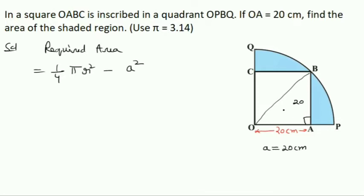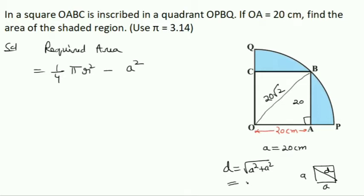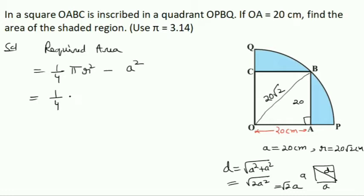Area of the quadrant is (1/4)πR² since it is one fourth of the circle, minus A² for the area of the square. The diagonal of a square is side × √2. By the Pythagorean theorem in triangle OAB: OB² = OA² + AB² = 20² + 20² = 400 + 400 = 800, so OB = 20√2. Thus the radius R = 20√2.